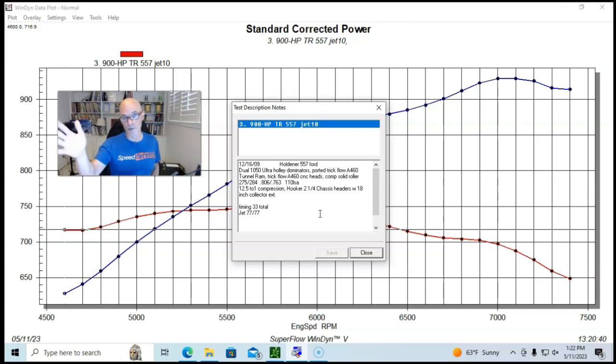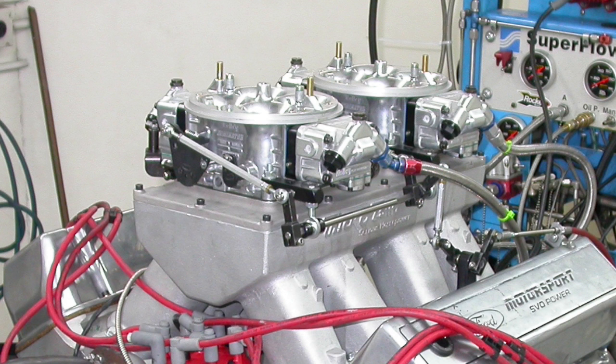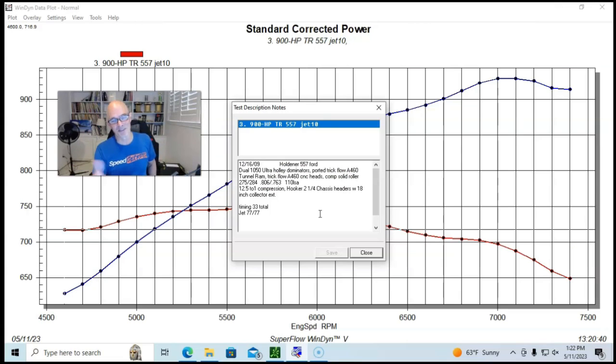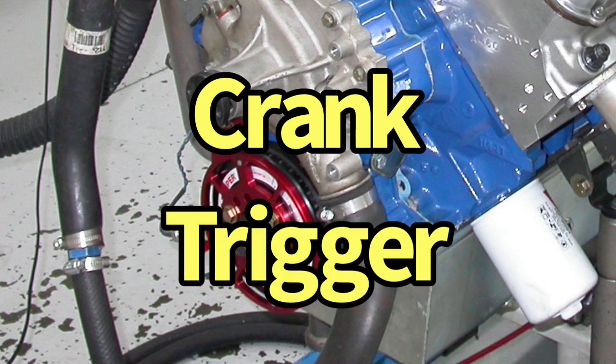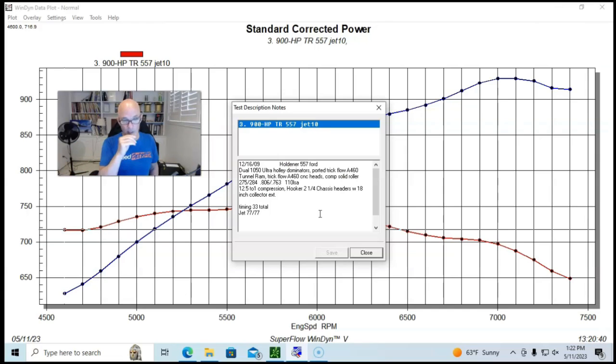We also had the TrickFlow A460 tunnel ram intake manifold on it. So that's part of the testing that we did. We did the tunnel ram versus a single four barrel. And we did a lot of stuff with different kind of heads and stuff. And it ended up at this kind of power level. But we also ran on top of that tunnel ram, we had a lid set up to accept two dominator carburetors. So it was dual 1050 Holley Ultra Dominators. It's just a very, very expensive induction system. We had two and a quarter inch chassis headers, 18 inch collector extensions, an MSD distributor.